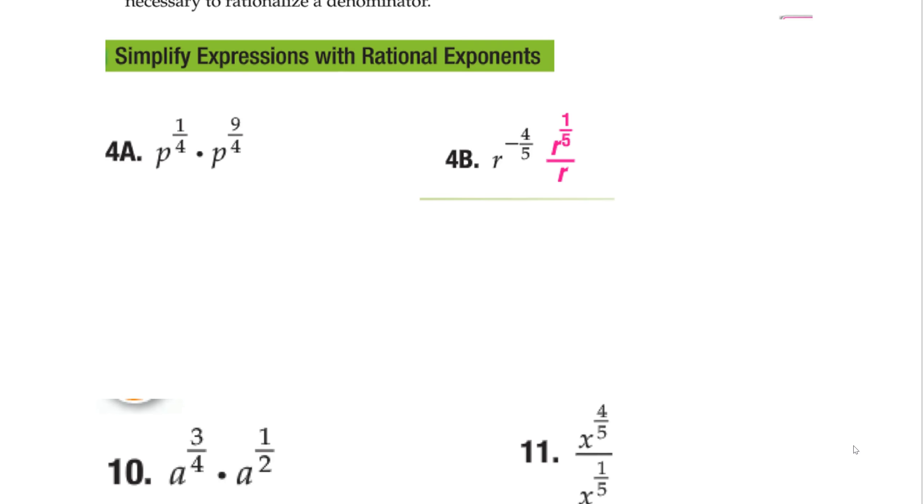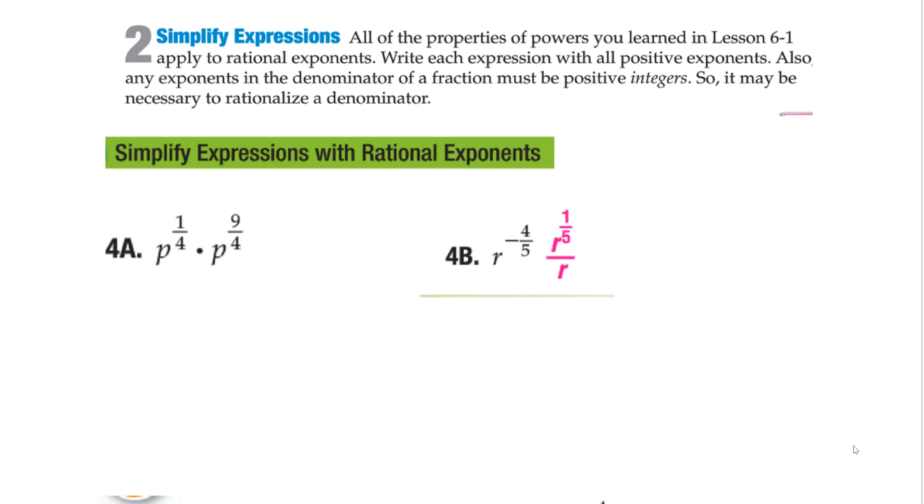Now let's talk about simplifying expressions. So look at this first one here. Now I'm going to do a problem first. Let's say I gave you p squared times p cubed. You're like, oh, you just add the powers. p to the 5th. 2 plus 3. Same thing here. I don't care if it's rational. I just want to do the exact same thing. 1 fourth. Oh, the same base. Plus add the powers. 9 over 4. So in this case, I get p to the 10 over 4. Also known as p to the 5 halves.